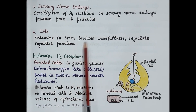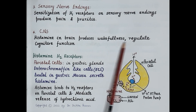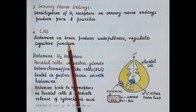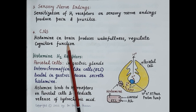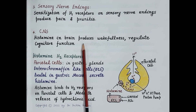Histamine in the brain produces wakefulness — that means it keeps us awake — and regulates cognitive functions like problem-solving, analyzing, and learning, and also reduces appetite. H1 antihistaminics are used clinically to counteract the pharmacological actions of histamine at H1 receptors.